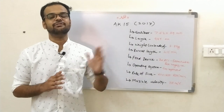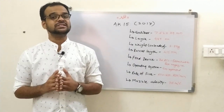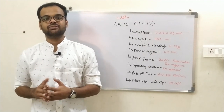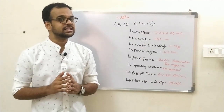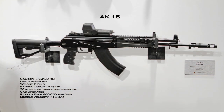The sixth weapon is the AK-15, which came into operation in 2017. The AK-12 and AK-15 are almost similar weapons with little difference — the main difference is the caliber. The AK-15 has a caliber of 7.62×39mm, overall length of 945mm, unloaded weight of 3.30kg, barrel length of 415mm, 30-round detachable box magazine, and is a gas-operated firearm firing 600 to 650 rounds per minute with a muzzle velocity of 715 meters per second.